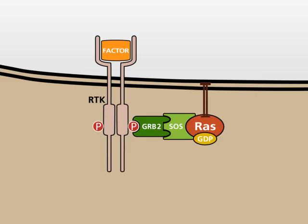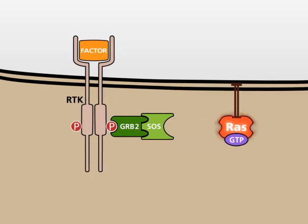Inactive RAS is bound to the nucleotide guanosine diphosphate, GDP. SOS catalyzes the exchange of the RAS-bound GDP against GTP, guanosine triphosphate. This exchange leads to the activation of the RAS protein.